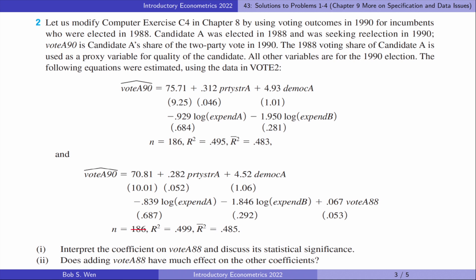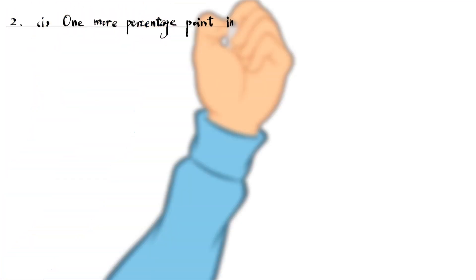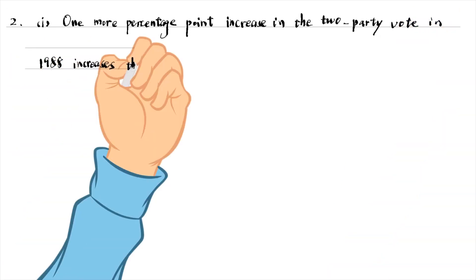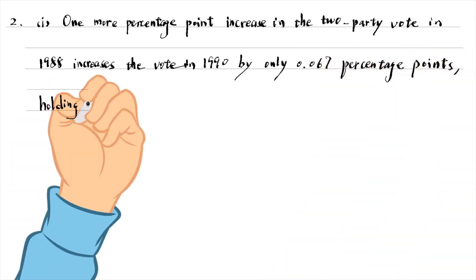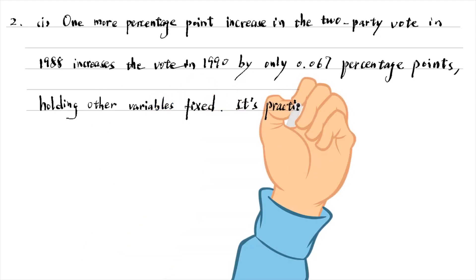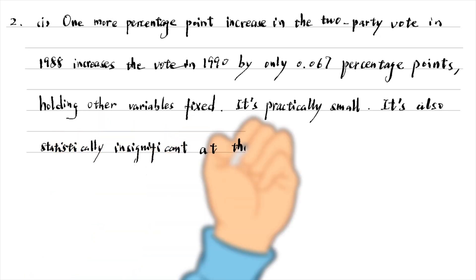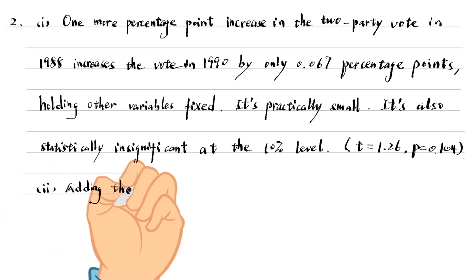Let's solve the second problem. For part 1, the coefficient on wrld88 suggests that one more percentage point increase in the world in 1988 increases the world in 1990 by only 0.067 percentage points, holding other variables in the model fixed. It is practically small. It is also statistically insignificant at the 10% level. The t-statistic is 1.26 and its p-value is 0.104. Adding the variable does not have much effect on the other coefficients.